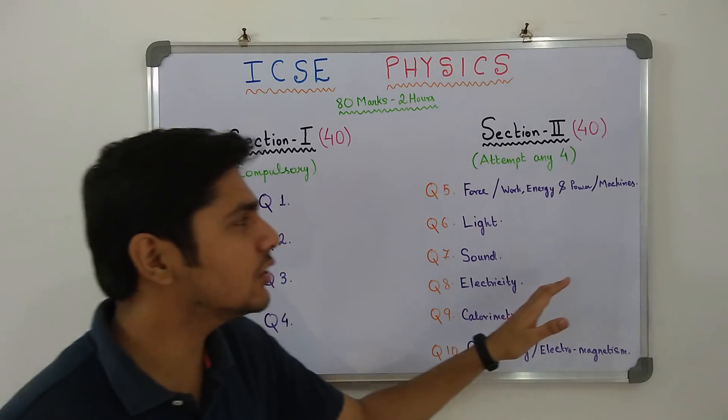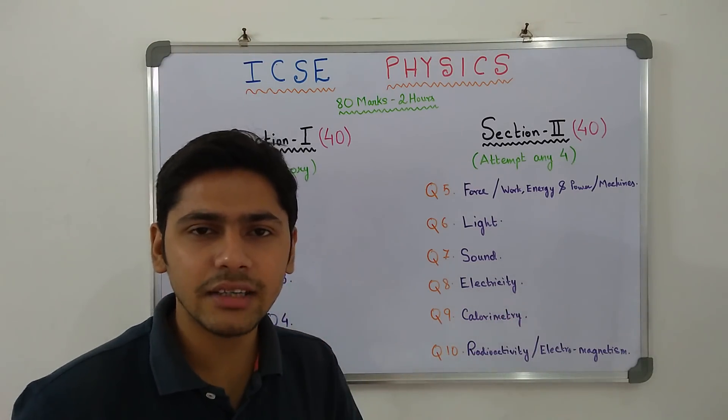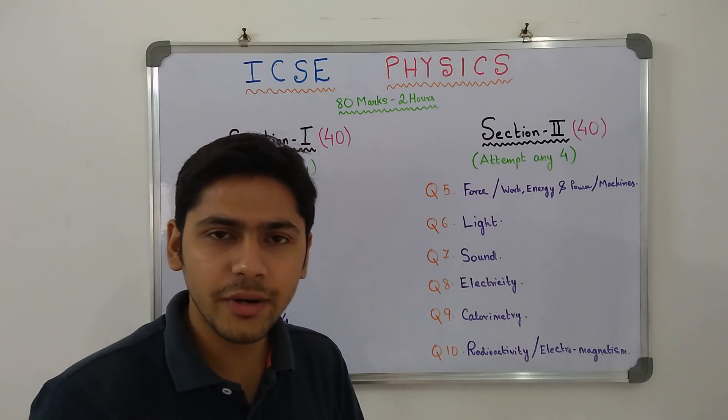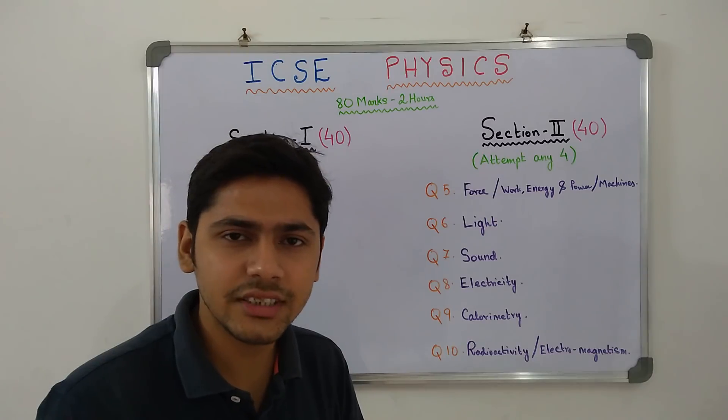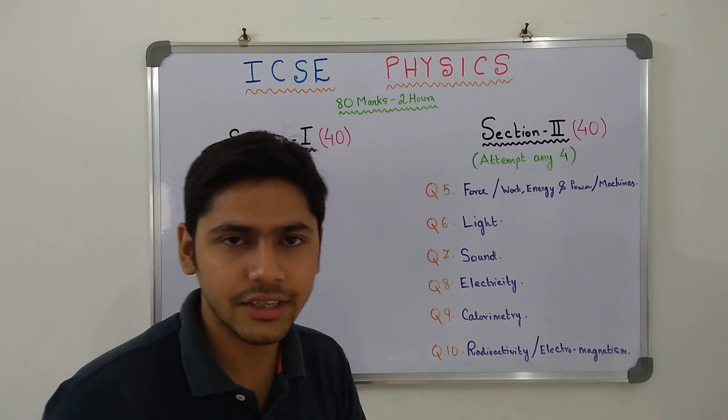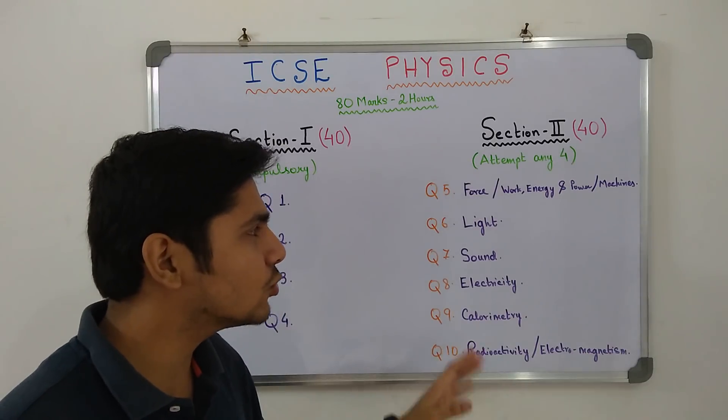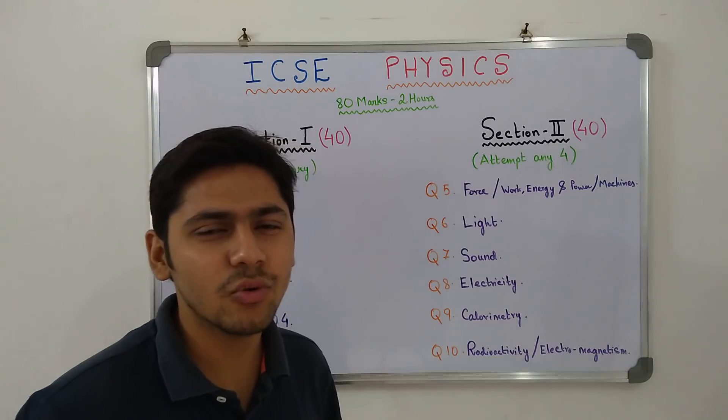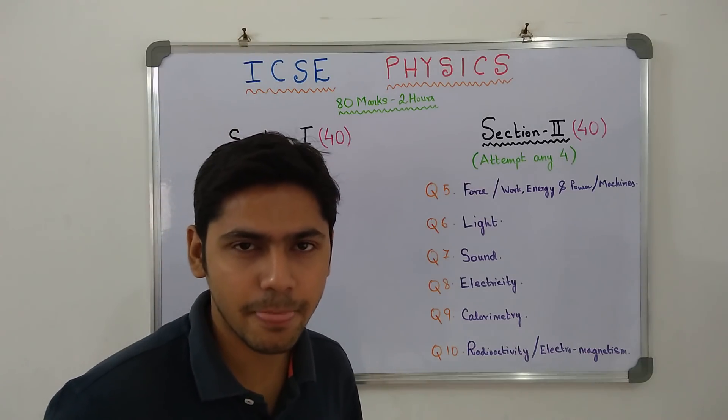Moving over to section 2. Here, 3 marks or 4 marks questions. Questions which type? Long numericals, diagram based questions, concept based questions and long definitions. And here, you will have to score full marks. If you have a clear concept in physics, you can easily score 80 out of 80 in the paper.